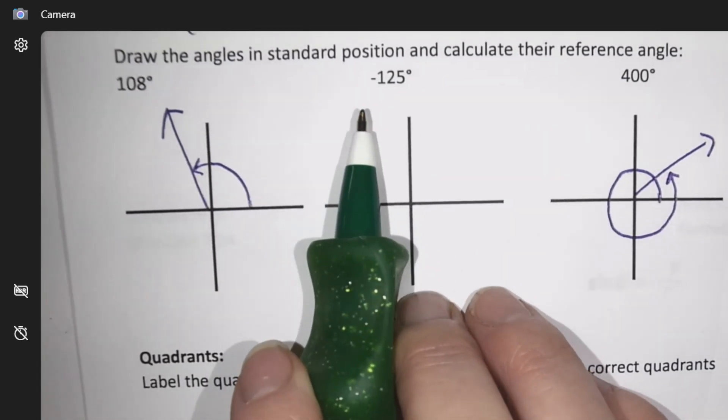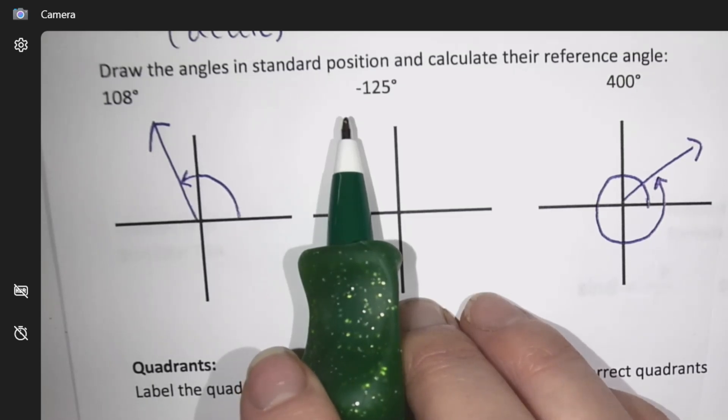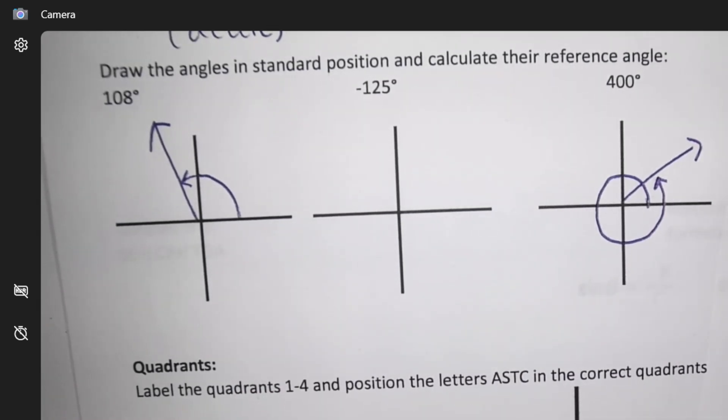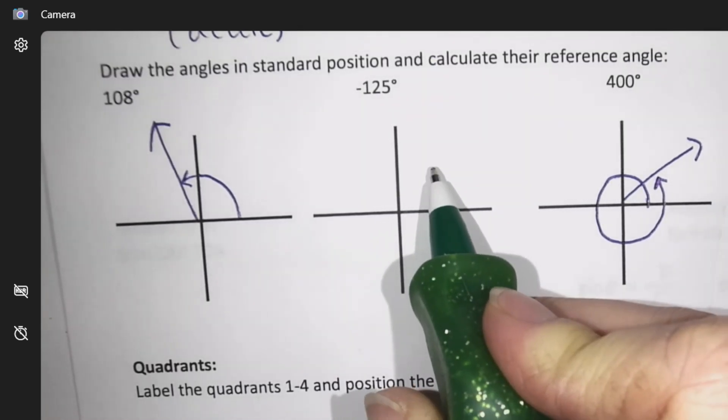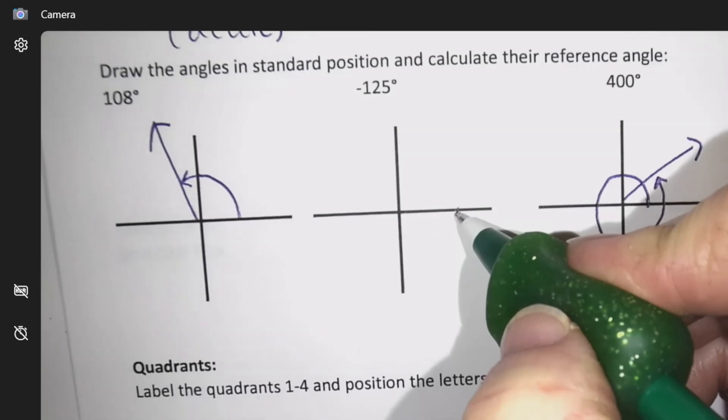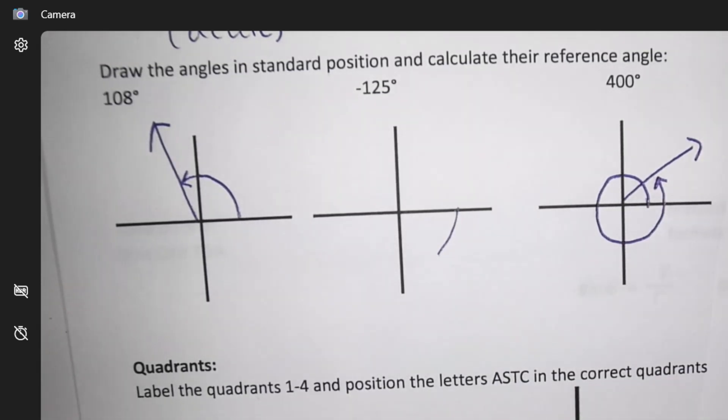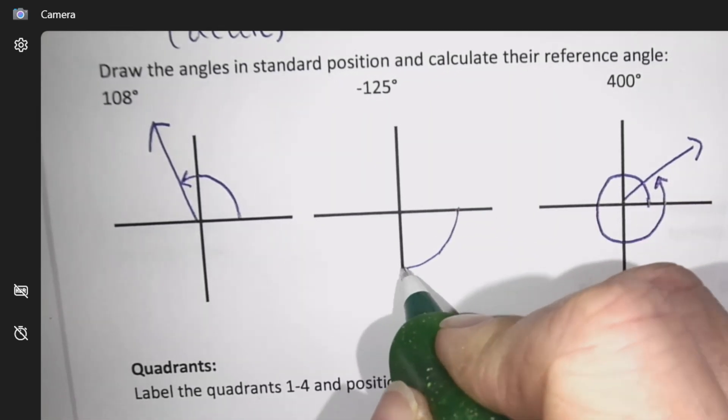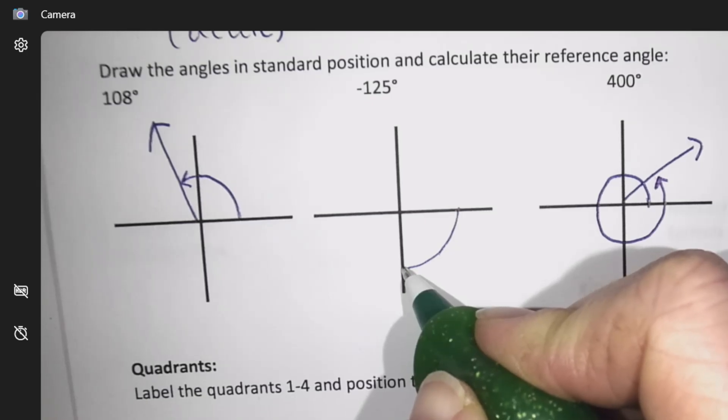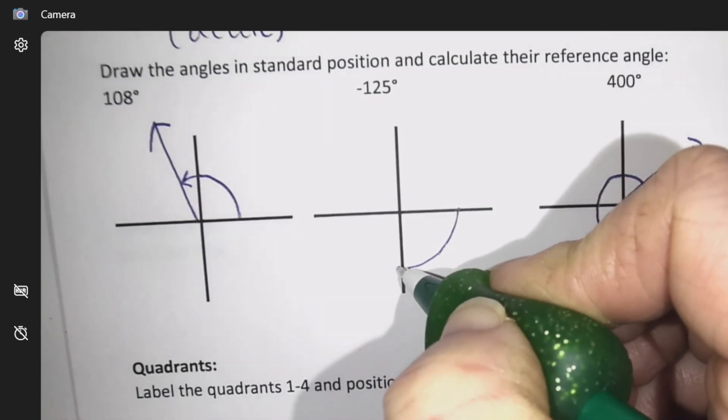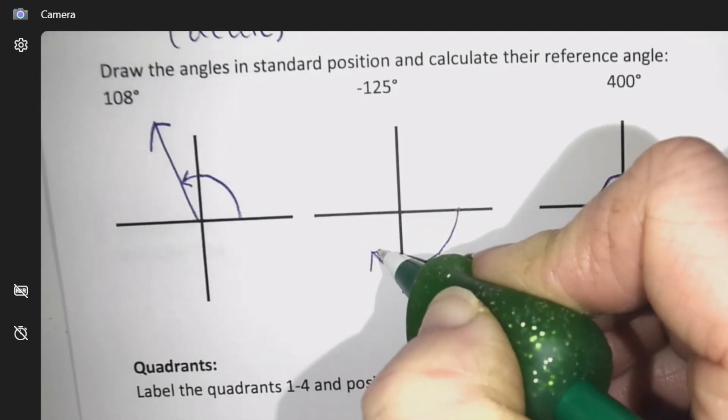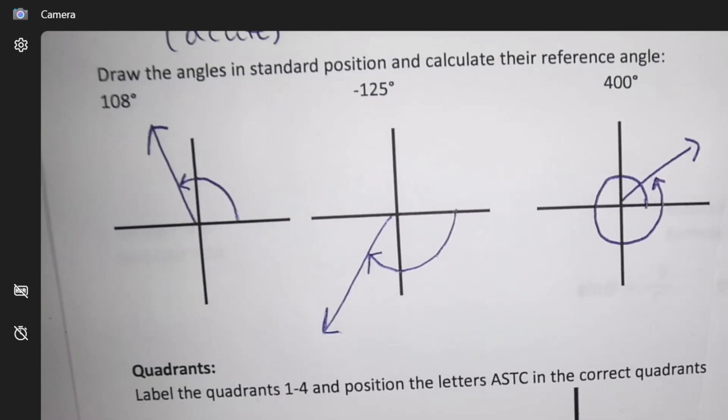The last one here is negative. Any predictions on what negative might do? It's going to go backwards. Before, I started here and I traveled upward. So I'm going to have to start this way, pivoting this way. So negative 125 degrees. This would be going negative 90. That's called drawing an angle: swivel and landing arm.